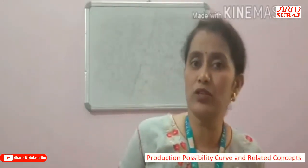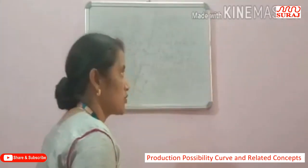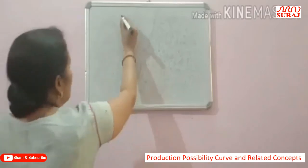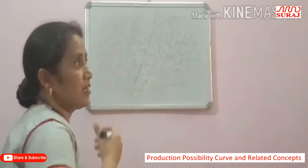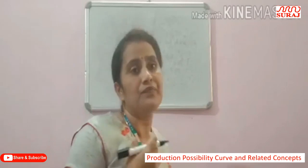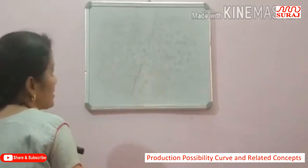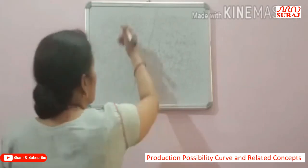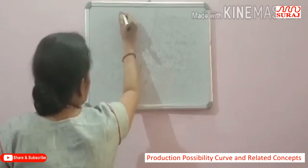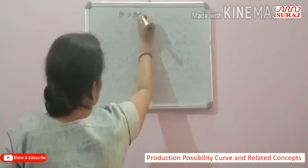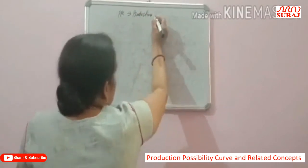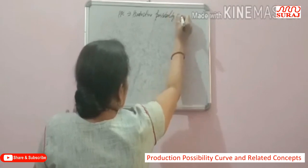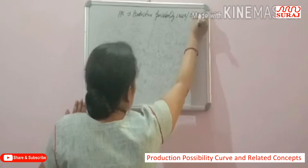Good morning to all, welcome back to our next class — Plus One. In the previous class we talked about the central problems: what to produce, how to produce, and for whom to produce. Today we are going to discuss the PPC, which means Production Possibility Curve. It is also called the Production Possibility Frontier or Transformation Curve.